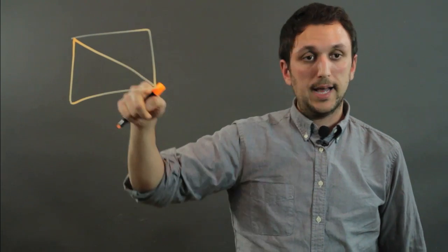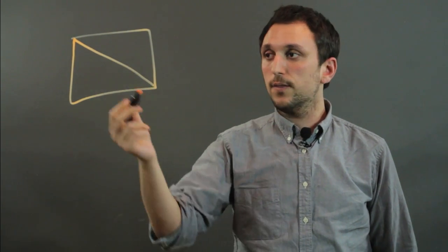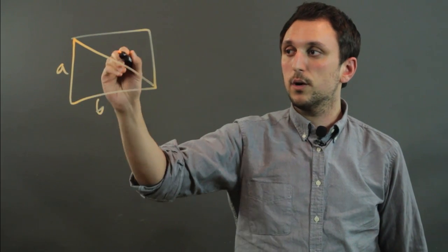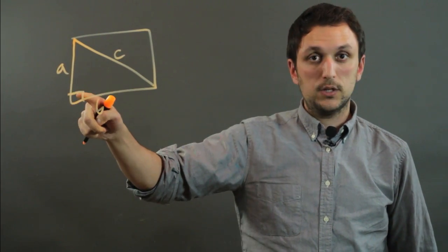But if all you have is the diagonal, then you can use the Pythagorean theorem, because a squared plus b squared equals c squared, and this is definitely a right angle.